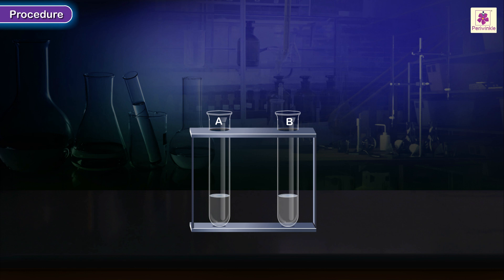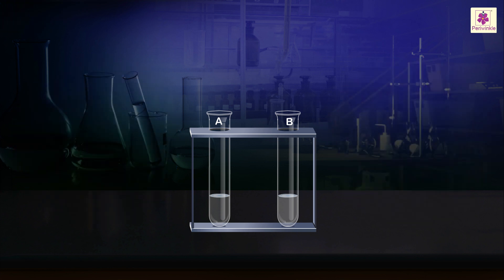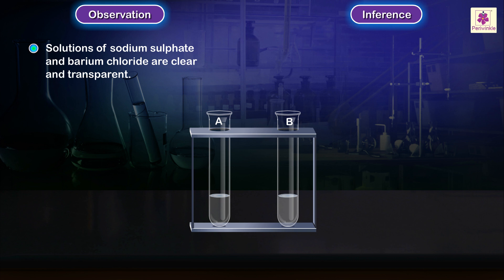Place the test tubes in the test tube stand and observe the color of the solutions. Observation and inference: Solutions of sodium sulfate and barium chloride are clear and transparent. Both solutions are colorless and transparent.